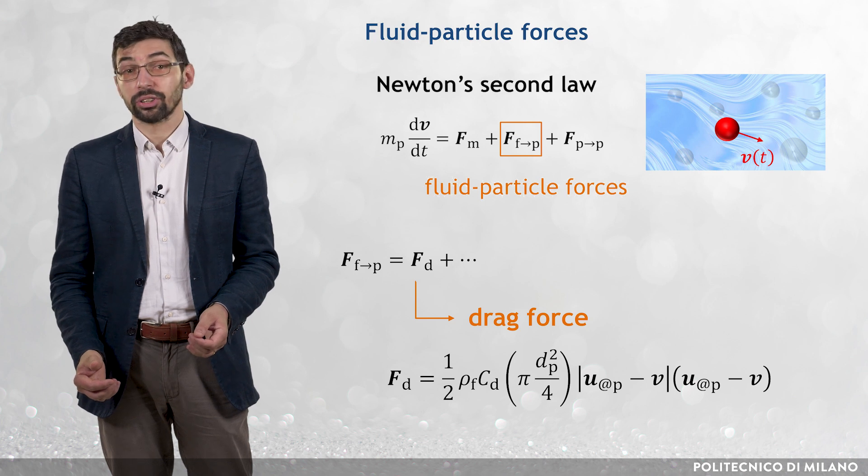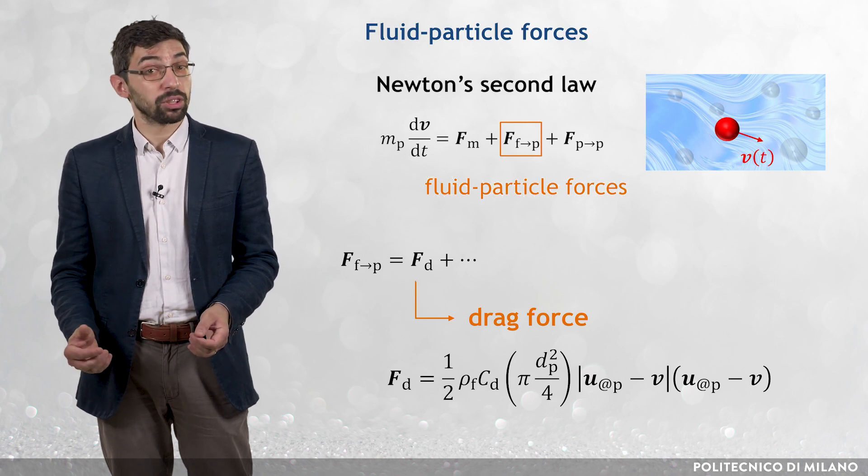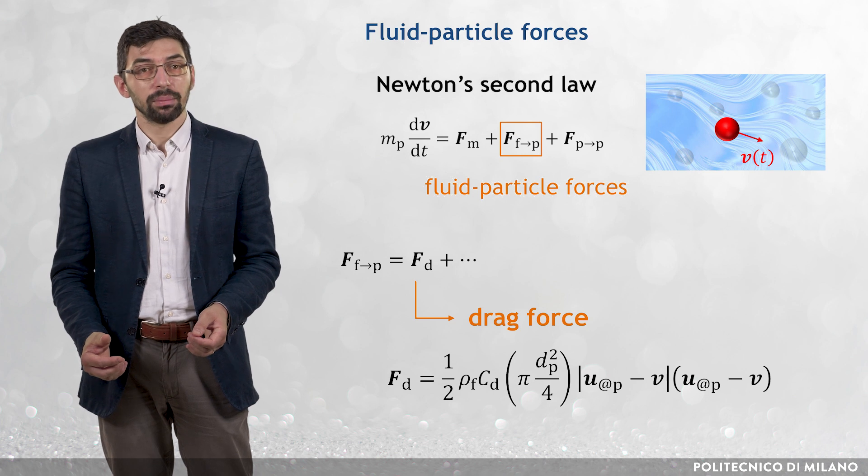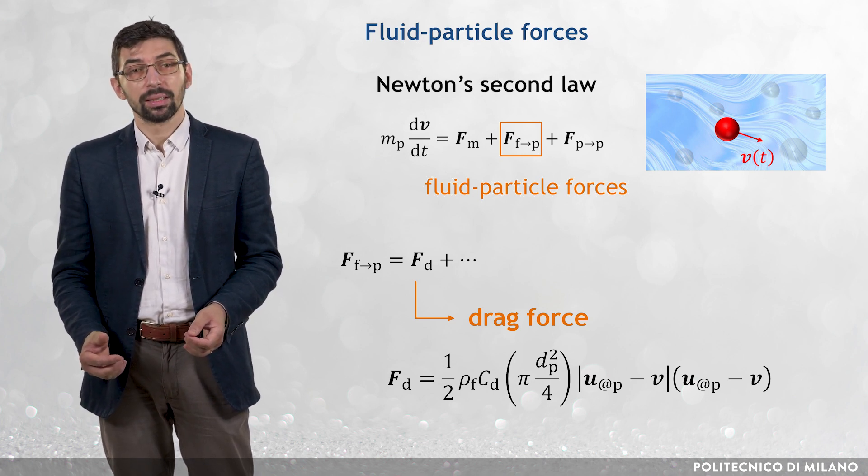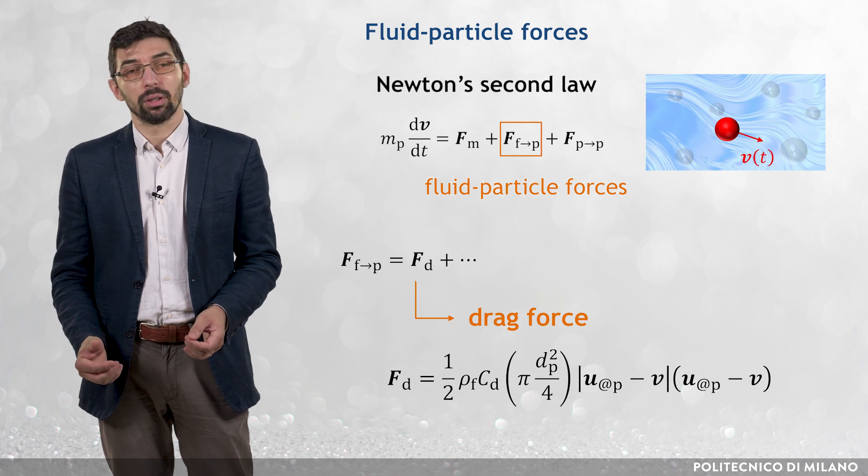times the area of the particle cross-section π dP squared divided by 4, times the absolute value of the relative fluid particle velocity, times the relative fluid particle velocity.